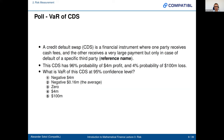The question is: what is the Value at Risk of the CDS at the 95% confidence level? The choices are: negative four million dollars (a profit), negative 0.16 million (the probability-weighted average), positive four million dollars, or one hundred million dollars (the maximum loss).